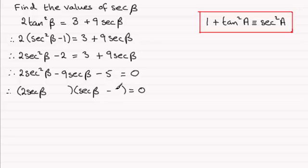if I put minus 5 here, I can see I'm going to get minus 10secβ. And if I put plus 1 here, plus another secβ, that's going to give me minus 9secβ, whilst 1 times minus 5 is that minus 5.